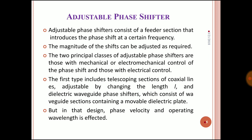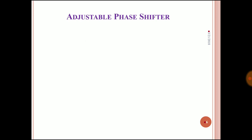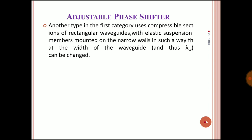By changing the length or by using a movable dielectric plate, phase shifting is possible, though it can affect phase velocity or operating wavelength. Another type in the first category uses a compressible section of rectangular waveguide with elastic suspension of members mounted on the narrow walls, so that the width of the waveguide can be changed. By changing the width of the waveguide, we can change the phase shift.